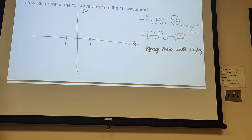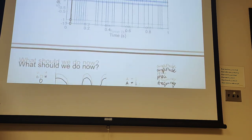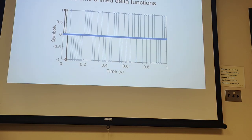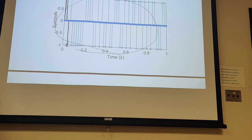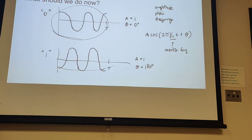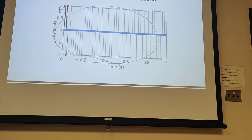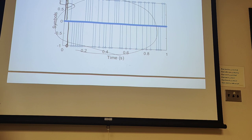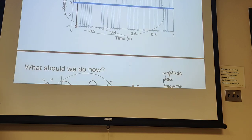Does everyone know what a phasor diagram is? Good. So we have a bunch of bits we want to transmit, and we give them some notion of time by representing them in time. We want to basically put our sinusoids at each position of the deltas. If you've taken 102 recently, you might know a handy property for doing this — what happens when you convolve with a time-shifted delta?